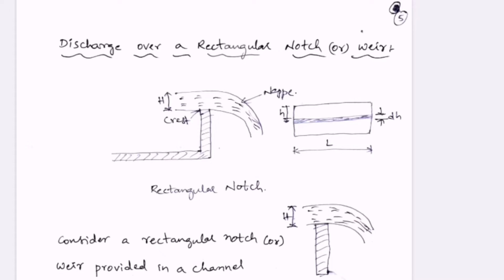In this video, I am going to discuss the derivation of a discharge over a rectangular notch or weir.